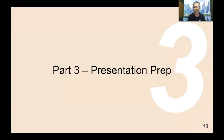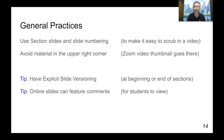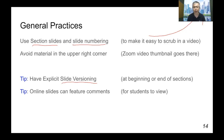Let's go on to presentation preparation. Here are some recommended best practices to make it easier for your learners to navigate your video on the electronic medium. For example, use section slides and slide numberings to make it very easy to scrub in the video — remember, learners are in the online environment and might want to skip to a certain part. We'd also like to make sure we avoid material in the upper right-hand corner, because the Zoom thumbnail lies in that area and content placed there will be obscured. Also, have explicit slide version numbers available at the beginning or end of each section, so it's easy for a learner to tell whether the distributed material corresponds to the one viewed in the video.